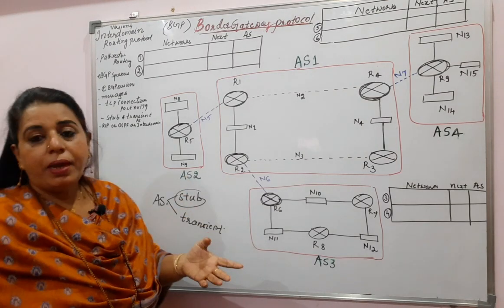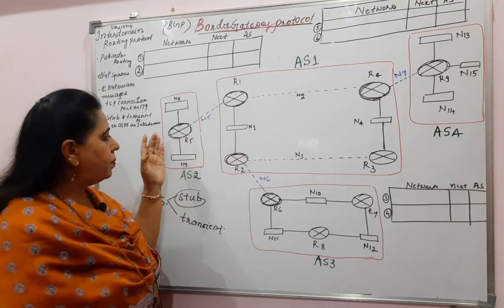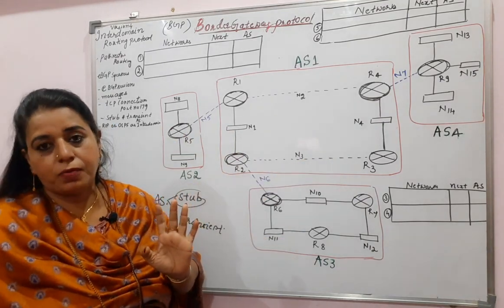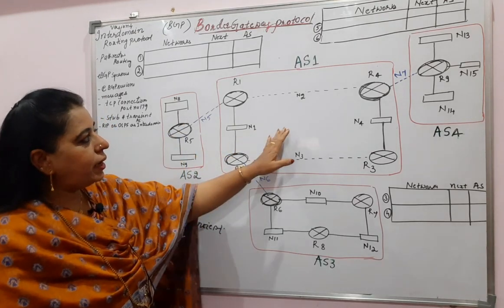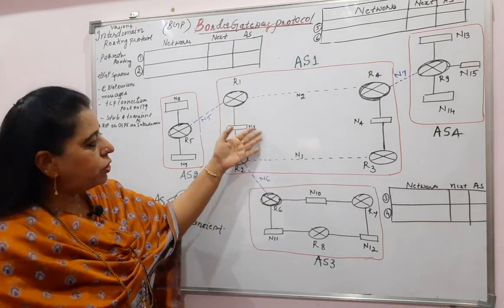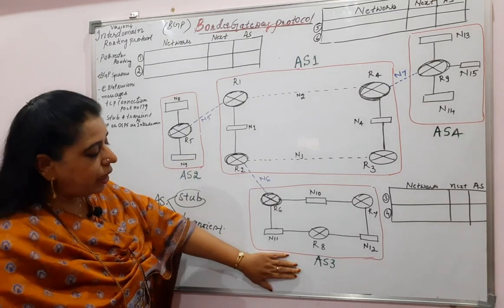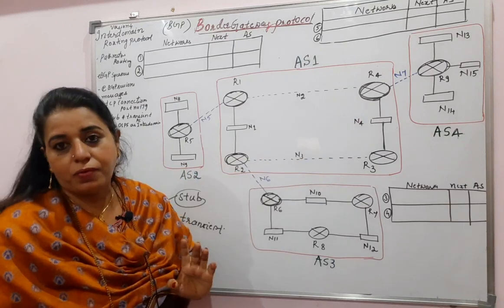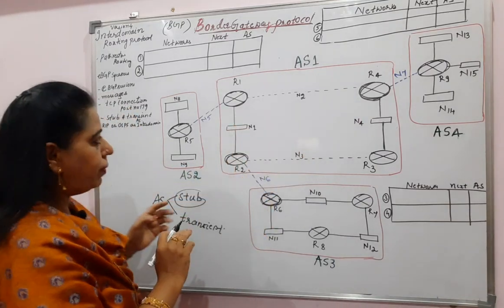The main aim here is that AS1 should reach networks in AS2, AS3, and AS4. Similarly, AS2 should reach networks in AS1, AS3, and AS4. AS4 should reach networks in AS1, AS3, and AS2. AS3 should reach networks in AS2, AS1, and AS4. For that reason, border routers are identified and sessions are established between them.